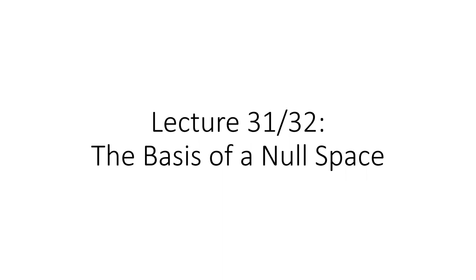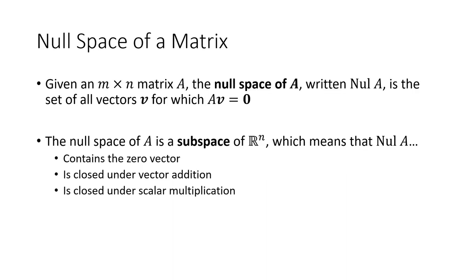This is a modified version of lectures 31 and 32 where I focus only on finding the basis of a null space. The null space of a matrix, written null(A), is the set of all vectors for which A times that vector equals zero — the solution set of Ax = 0. That is a subspace of R^n, which means it contains the zero vector, is closed under vector addition, and is closed under scalar multiplication.